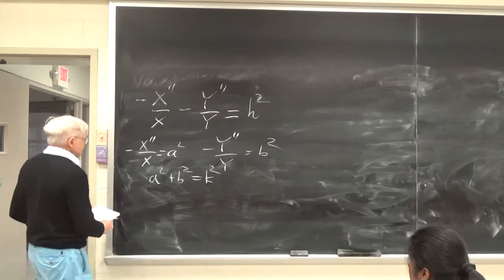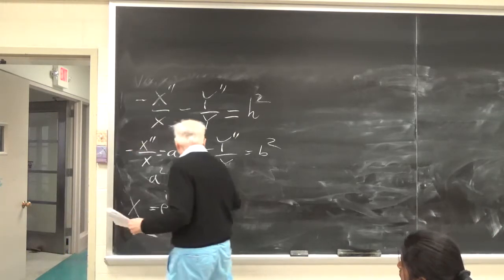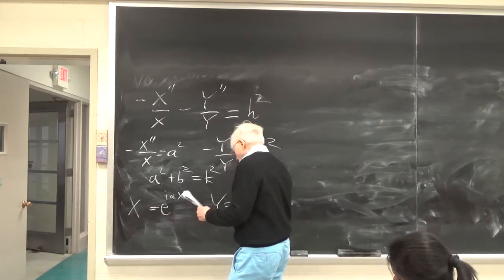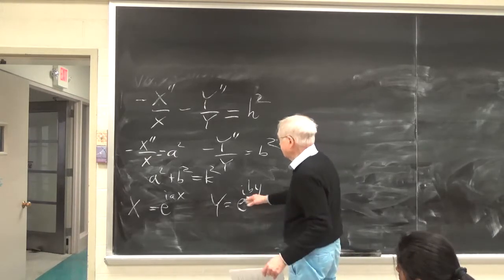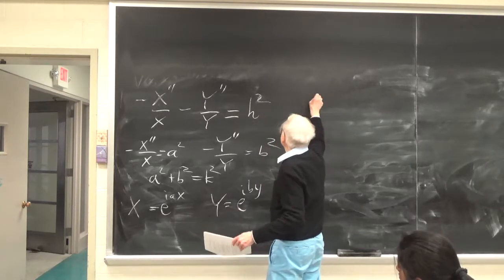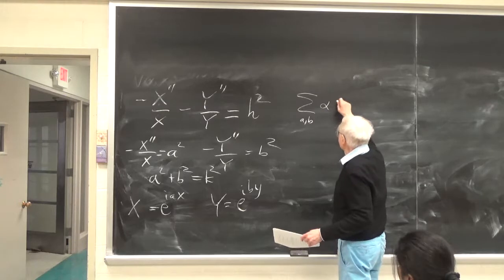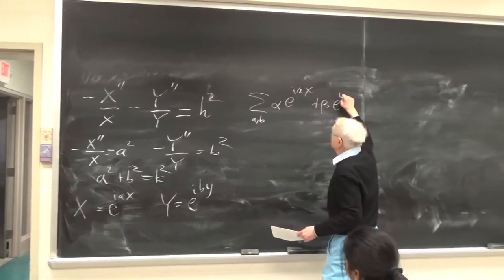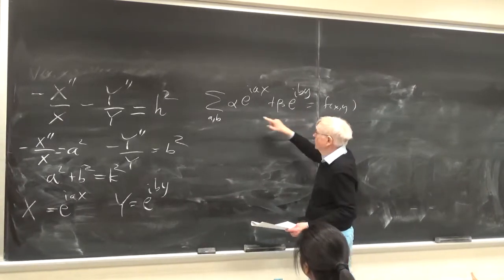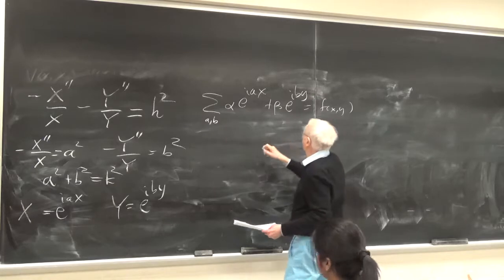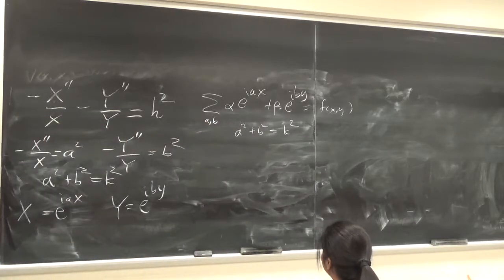The first term is a function of x, the second is a function of y, and k² is a constant, so each term must be separately constant. We say minus X''/X equals a² and minus Y''/Y equals b², with a² plus b² equals k². The solutions are X equals e^{iax} and Y equals e^{iby}, and any linear combination — a sum over a and b of α·e^{iax} plus β·e^{iby} — is a solution as long as a² plus b² equals k².